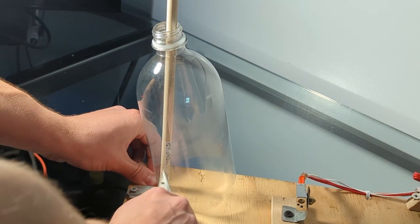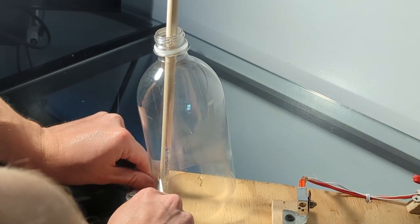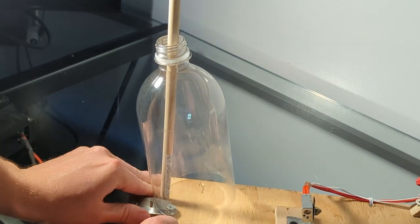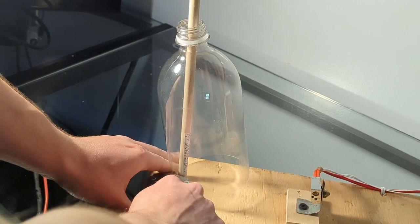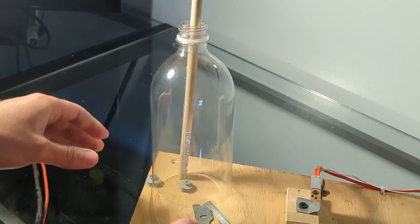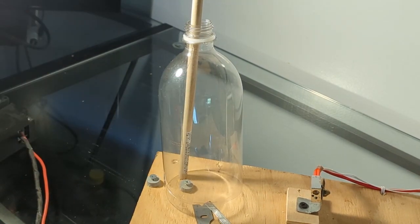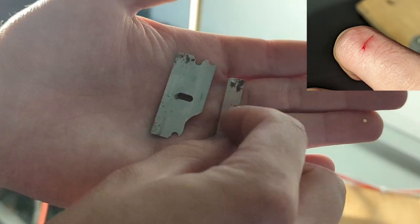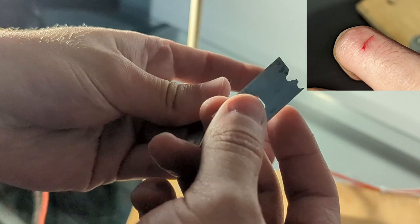Every time I tried to make something to cut the bottle, I kept having failures. This is one of the failures. As you can see here, the razor blade kind of broke. The razor blade ended up flexing a little bit too much and broke into two pieces. I ended up cutting myself as well a little bit, so be careful.